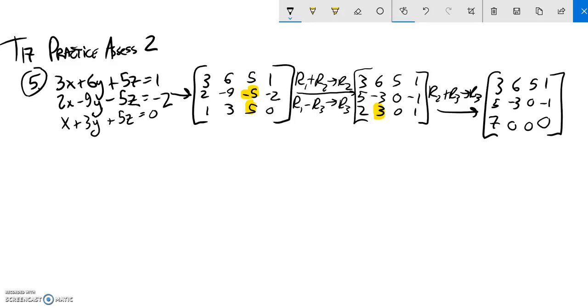So this is not a no-solution situation. 7x equals 0. So that means that x equals 0. Great.